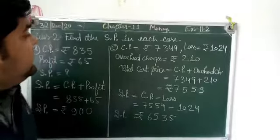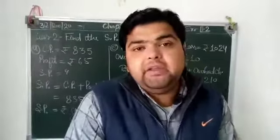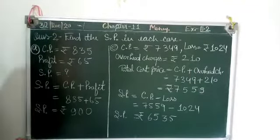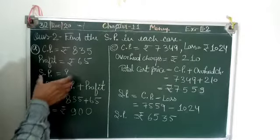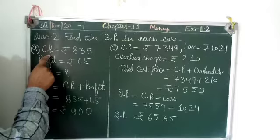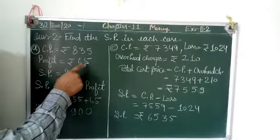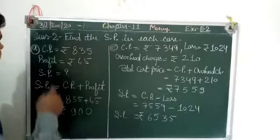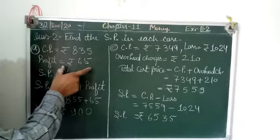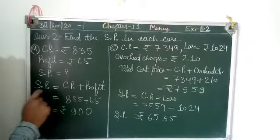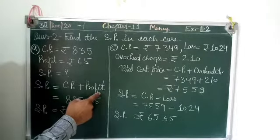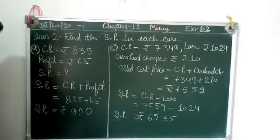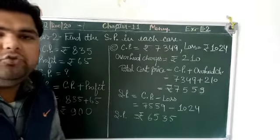Question number 2 says: find the SP in each case. CP is 835 rupees and profit is 65 rupees — find the SP. SP = CP plus Profit, so SP = 835 plus 65 = 900 rupees. So SP is 900 rupees.